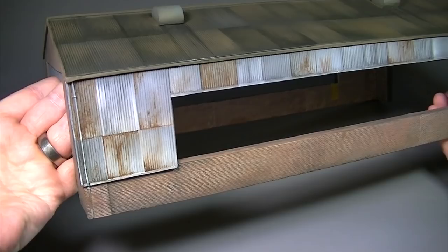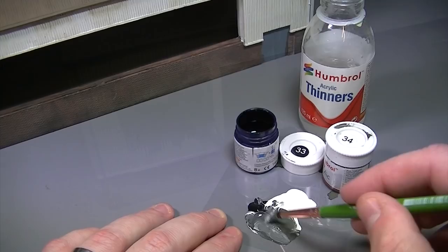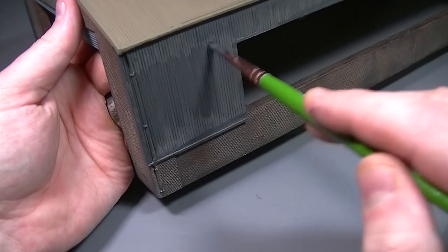Before we do any weathering on this model we're going to need to repaint it. Here we're using thinned down Humbrol acrylics and we're going to paint the roof a shade of brown and the walls a shade of grey. Several thin layers of paint are applied to build up the colour rather than one thick layer. For more information on brush painting with Humbrol acrylics our video on the new flat brushes range covers the subject in a little more detail.